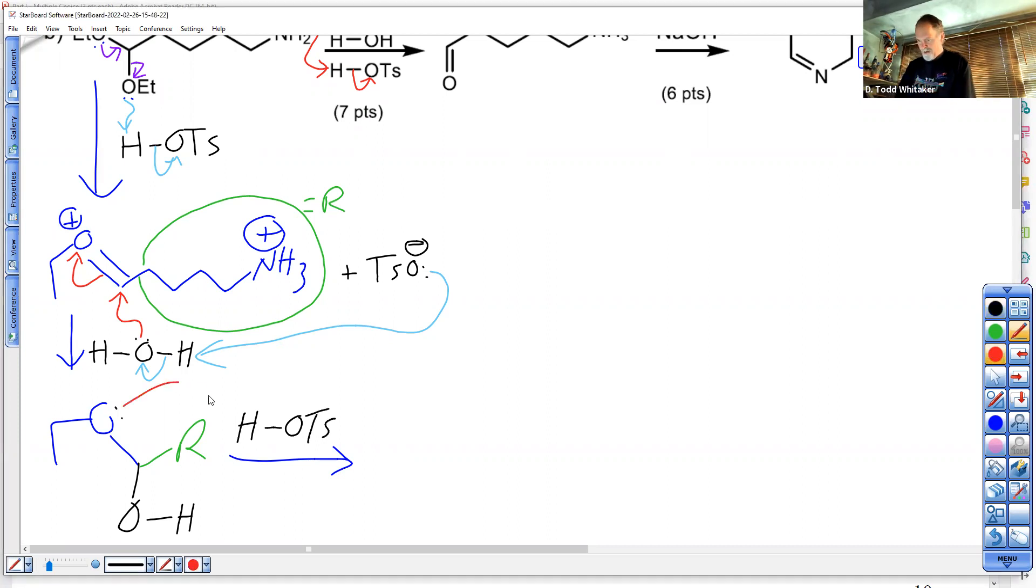I make it go by protonating it first. And here it is, protonating it to make it a better leaving group. The OTS minus that you just made comes back and grabs the proton, carbonyl, leaving group leaves. And that gets us right up there. Nice.